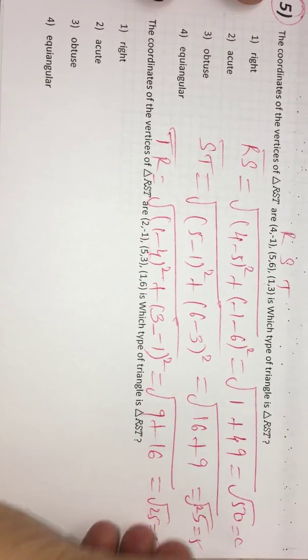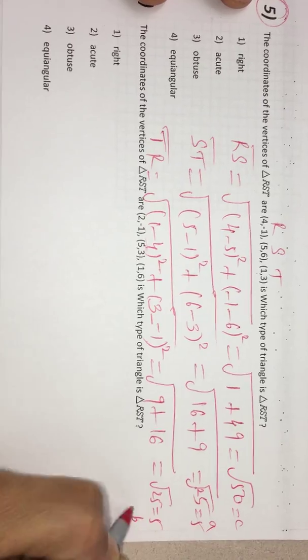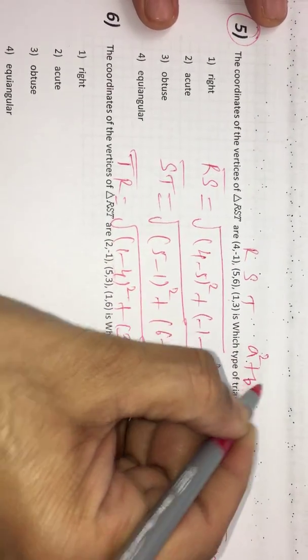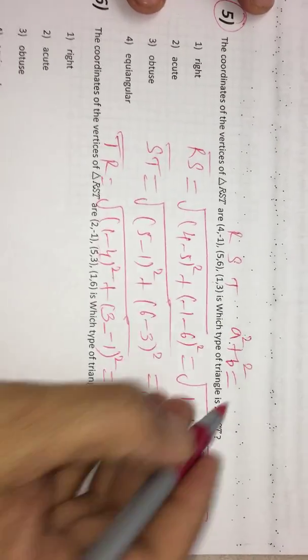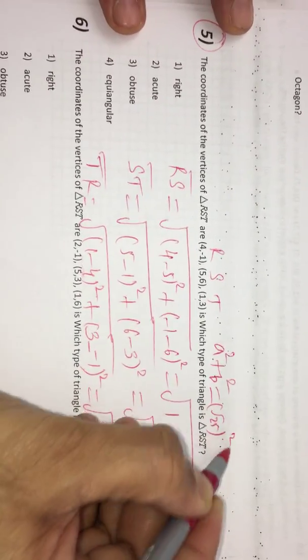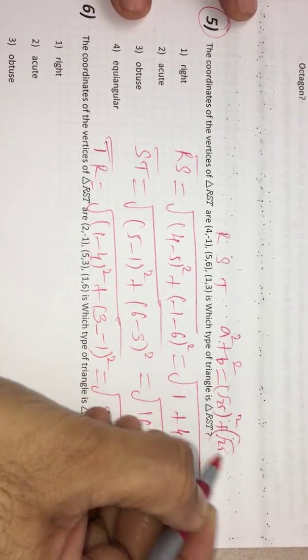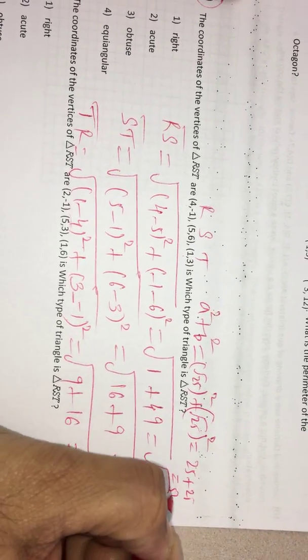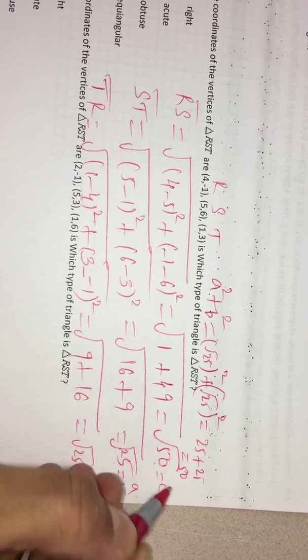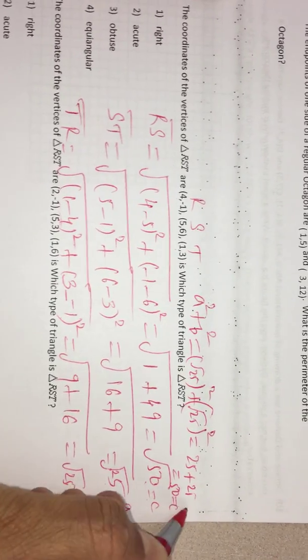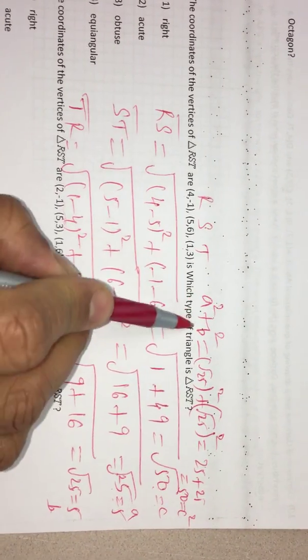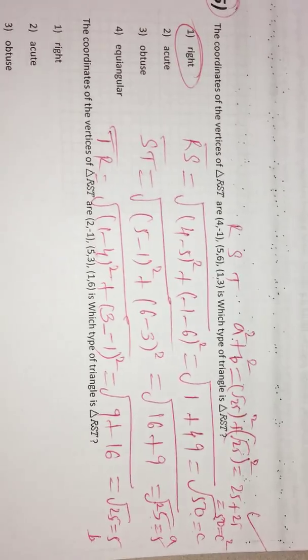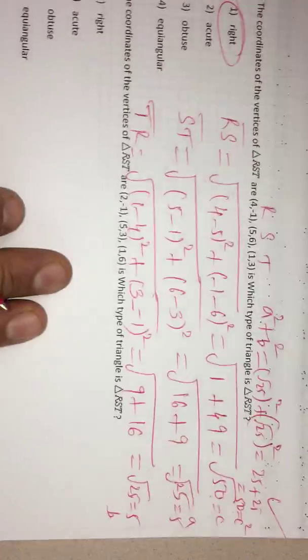Now, if you call this as C, this is A, this is B, because A square plus B square is root 25 square plus root 25 square. That gives me 25 plus 25, that is 50. This 50 is nothing but C square. That means when A square plus B square is equal to C square, we can say that is a right triangle. In the same way, you can try 6.